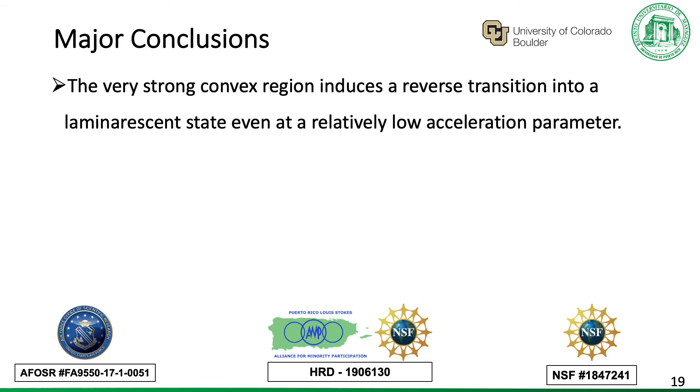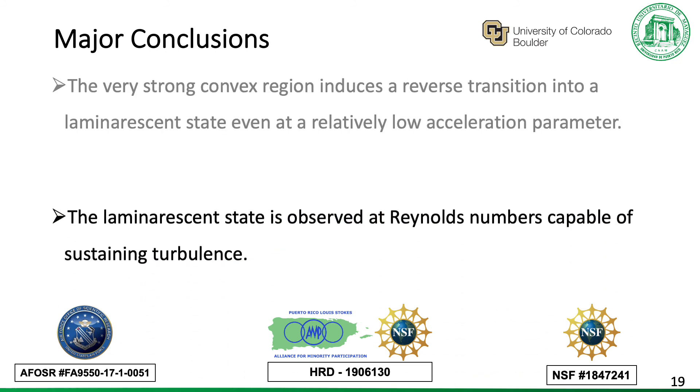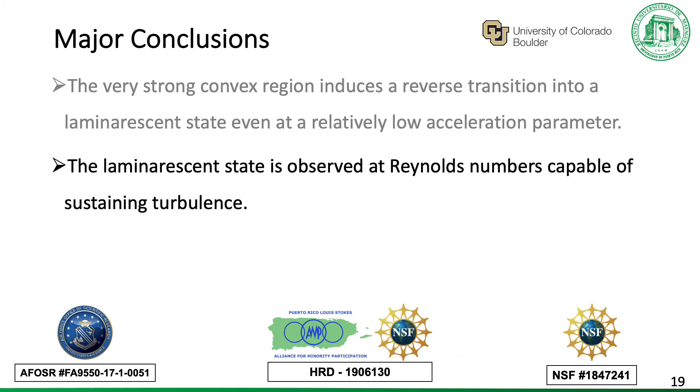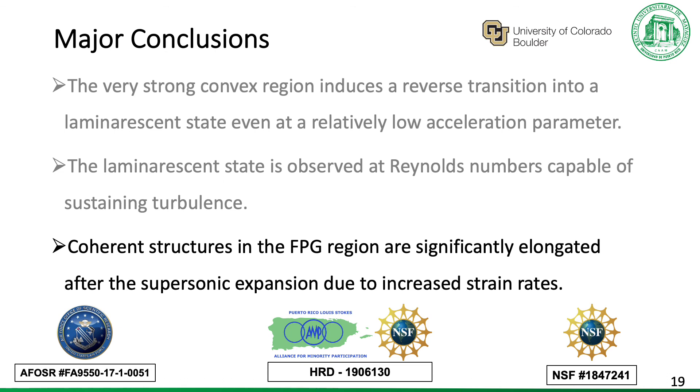Now some take-home messages. A very strong convex region induces a reverse transition into a laminarized state, even at a relatively low acceleration parameter. The laminarized state is observed at Reynolds numbers that are, or should be, sufficiently capable of sustaining turbulence. And the coherent structures in the FPG region are significantly elongated after the supersonic expansion due to increased strain rates.